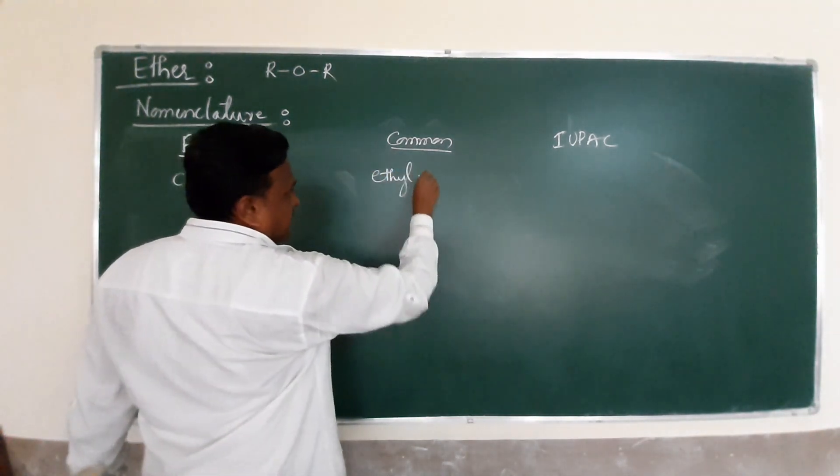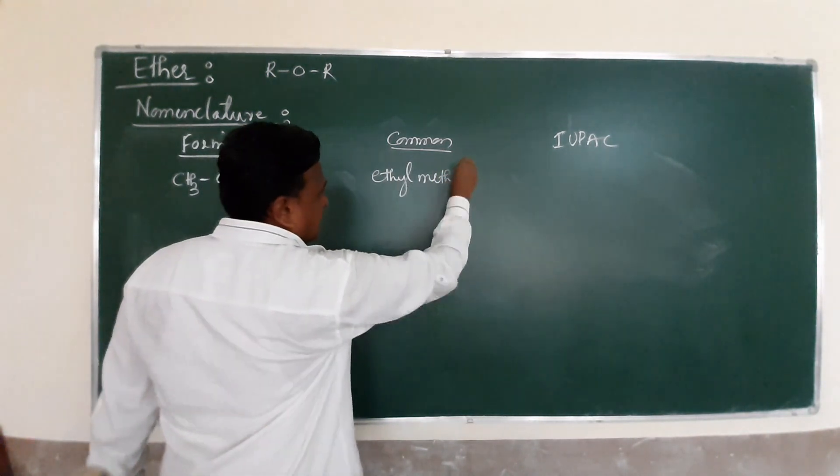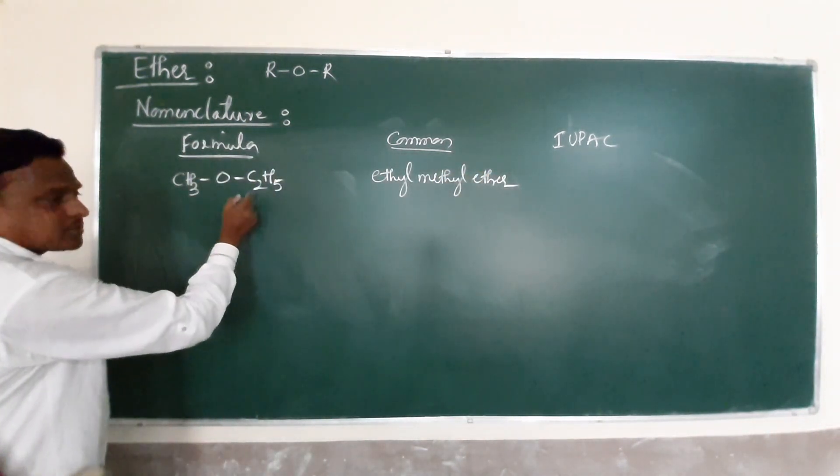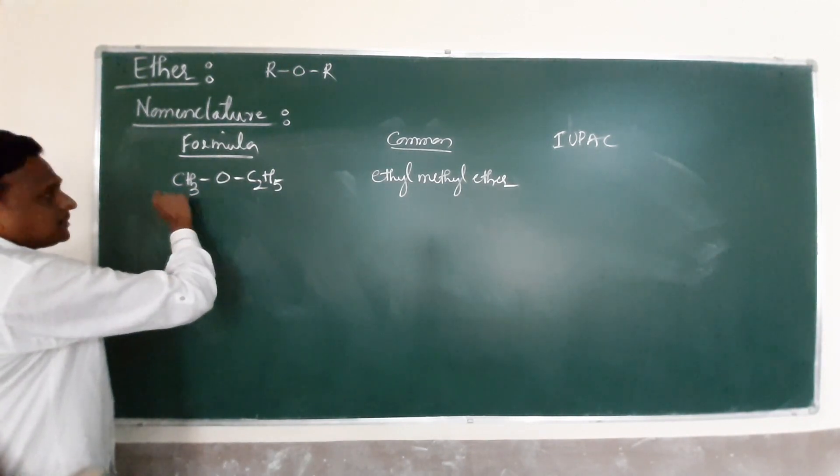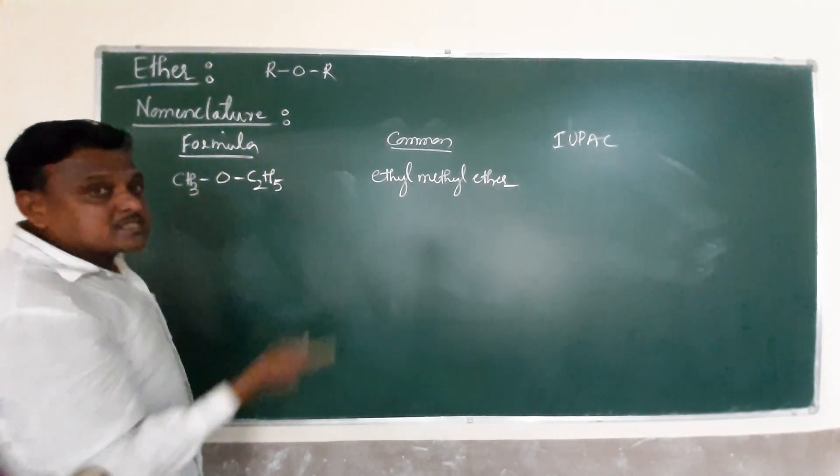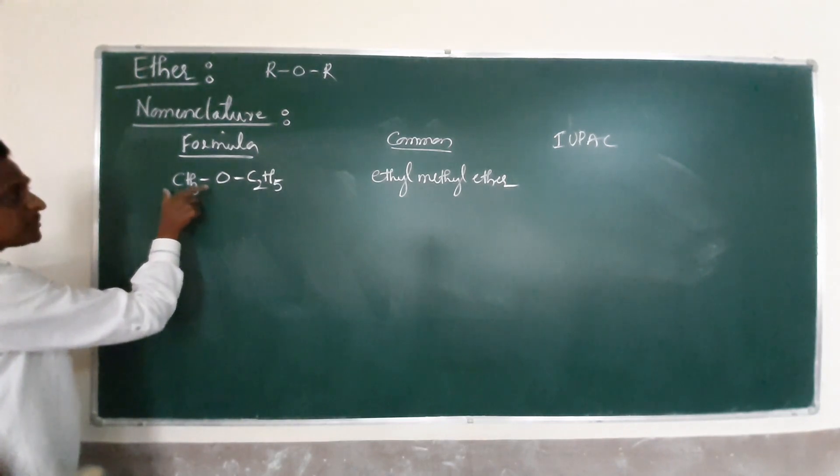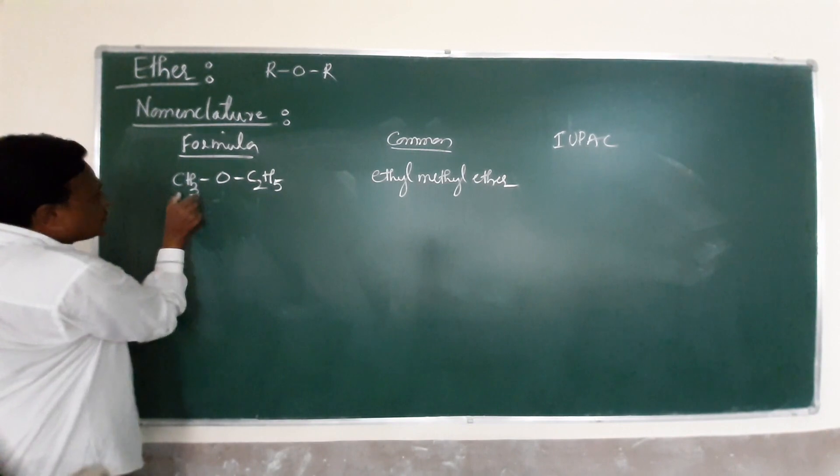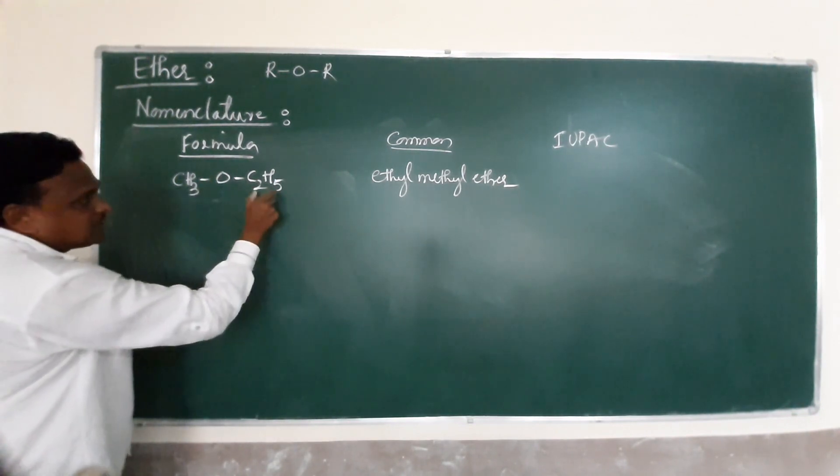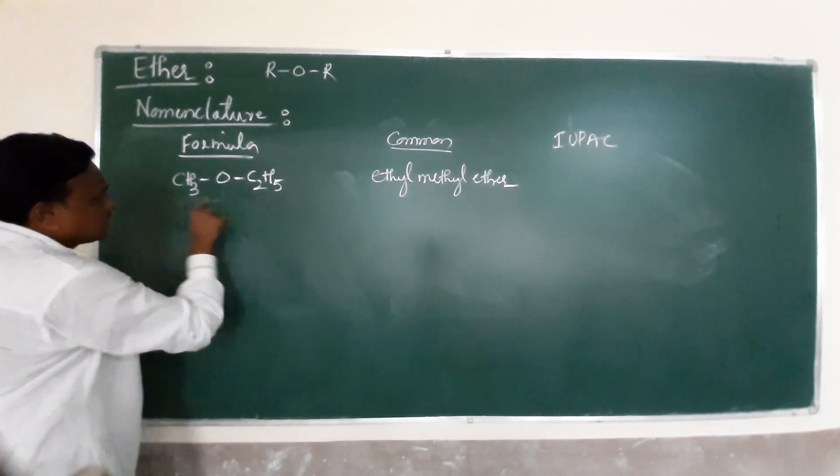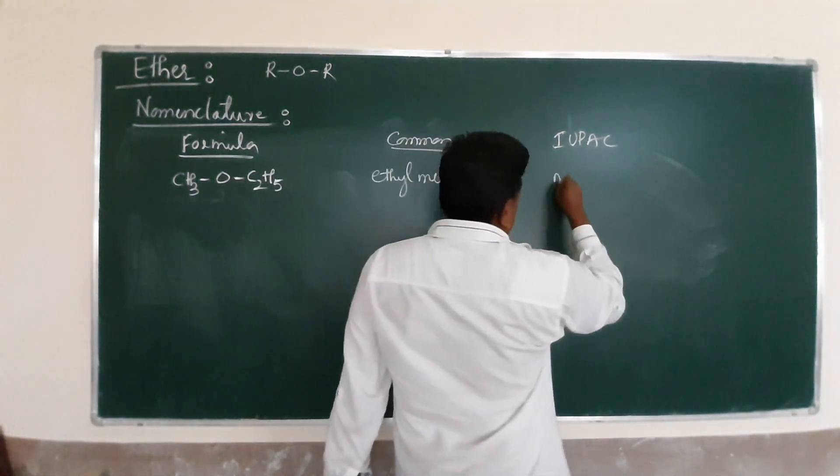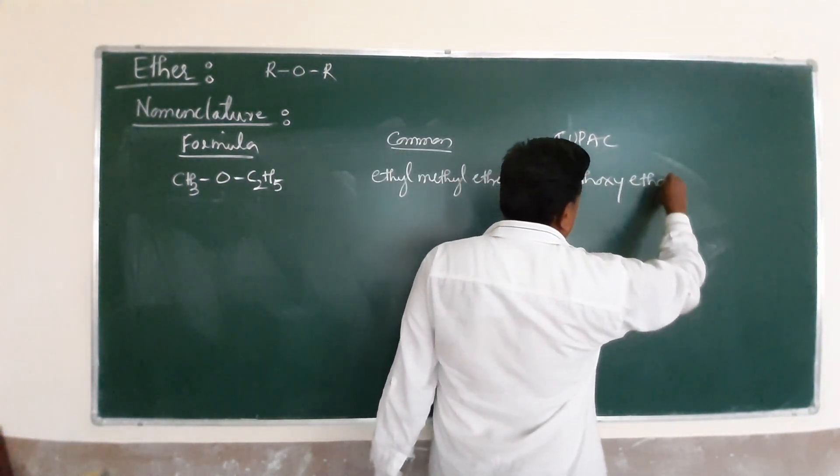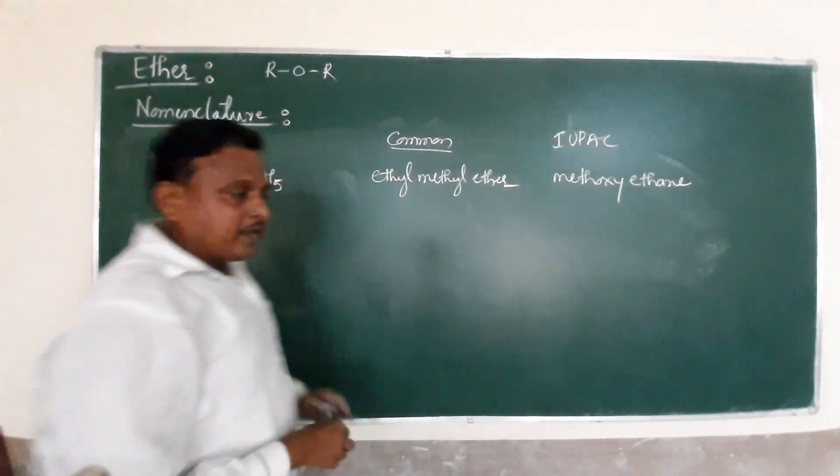So the common name is ethyl methyl ether. IUPAC is completely dependent on size - alkoxy must be the smaller group, alkane must be the larger group. The name of this compound is methoxy ethane.